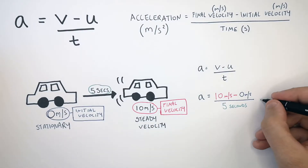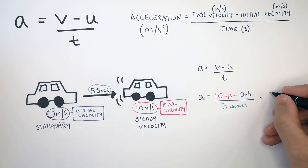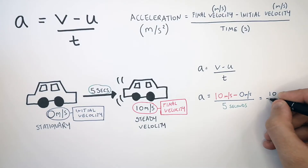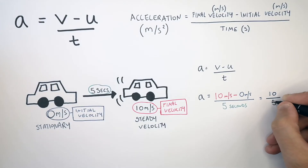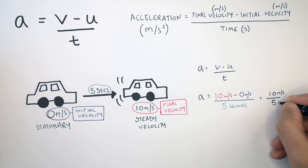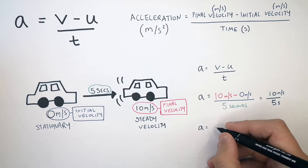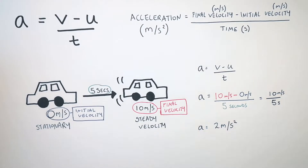So that's going to be 10 minus 0, which gives you a change in velocity of 10 meters per second. Then you divide the change in velocity by time: 10 divided by 5 seconds. That gives you an acceleration of 2 meters per second squared.